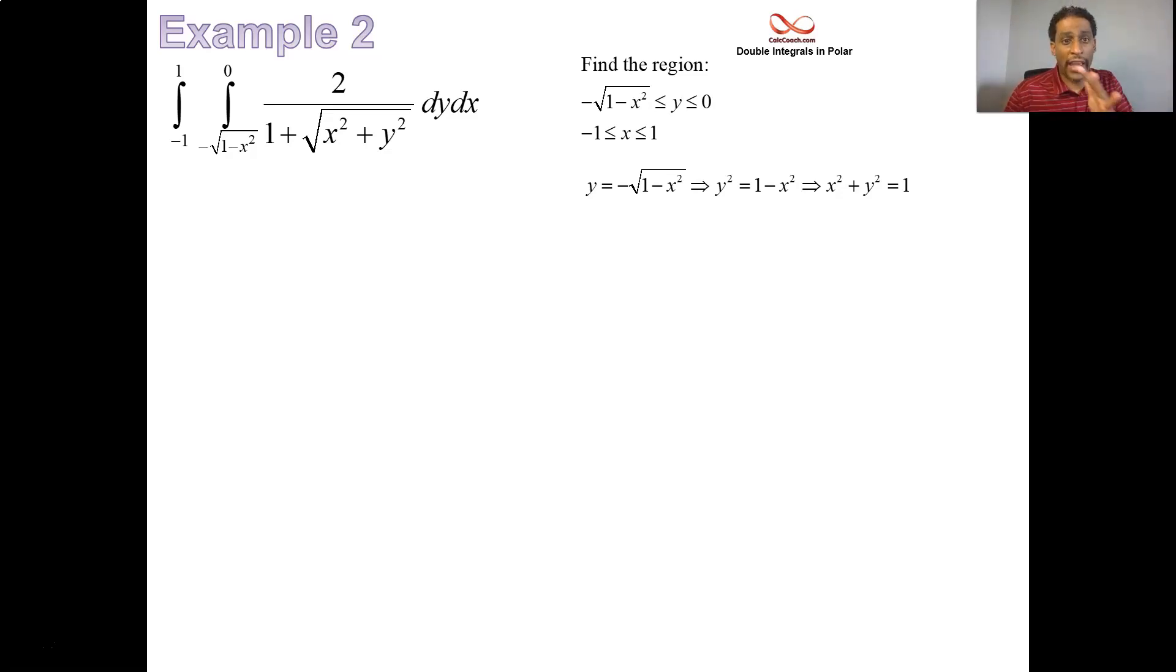But it's the lower half of it. You see, the biggest y ever gets is 0. The upper limit on y is 0. And then it's both the third and the fourth quadrant, because x goes from minus 1 to 1. So there's your region.